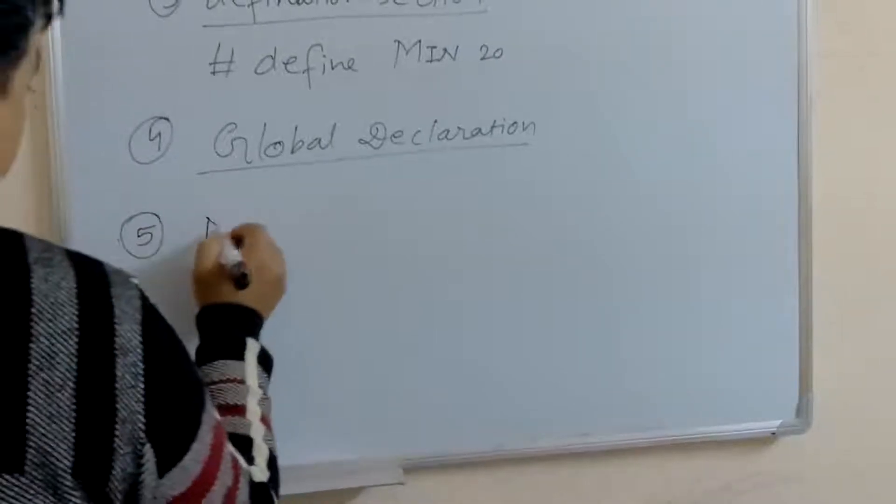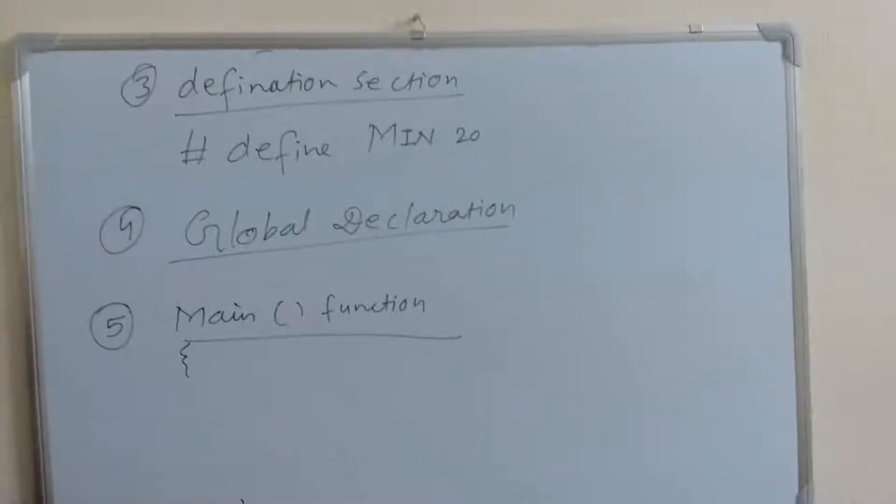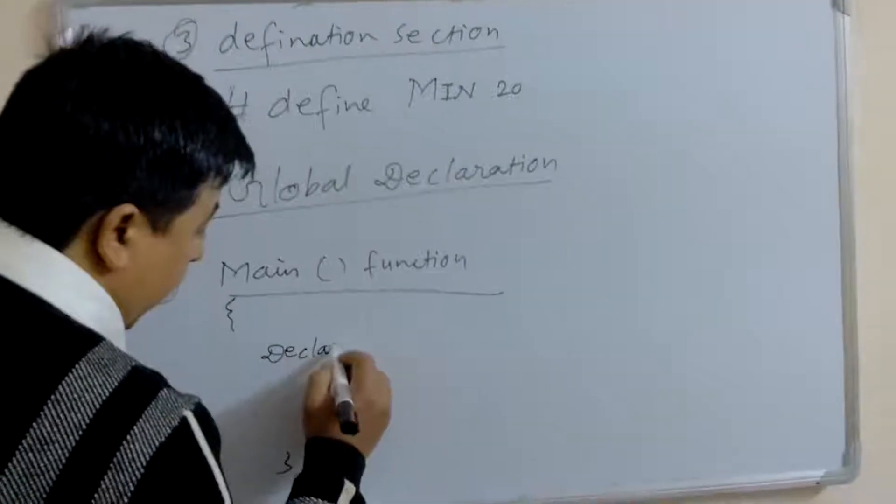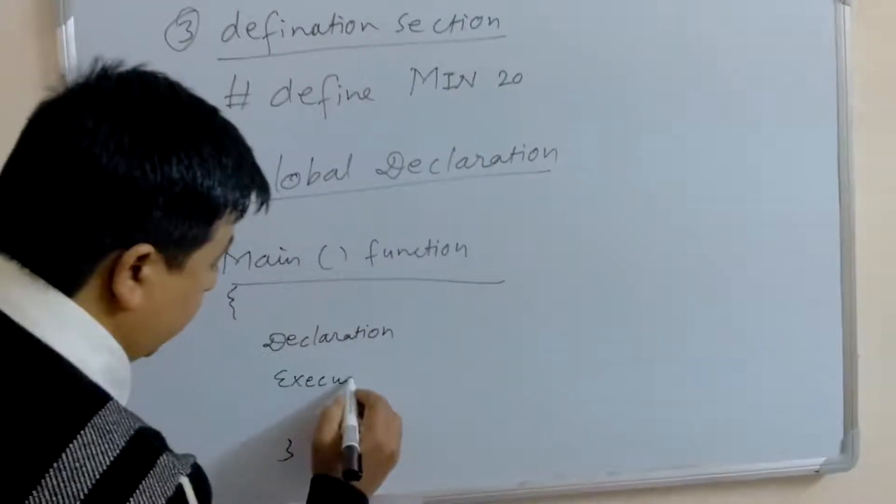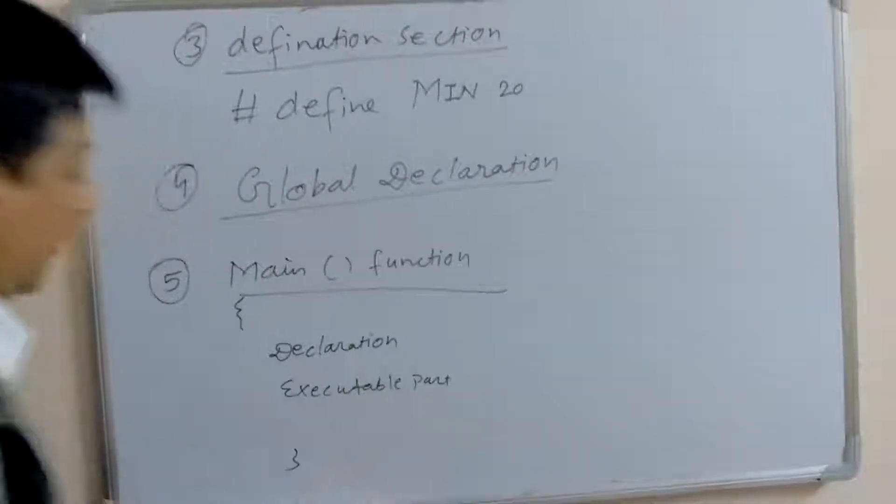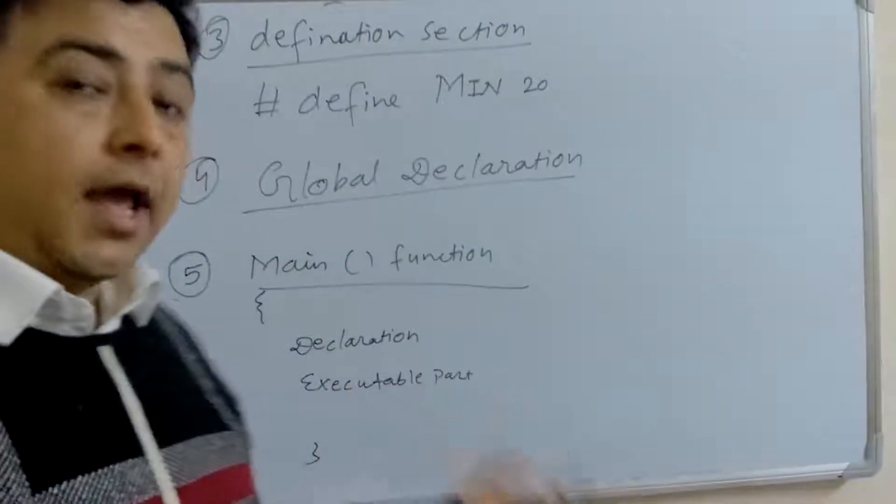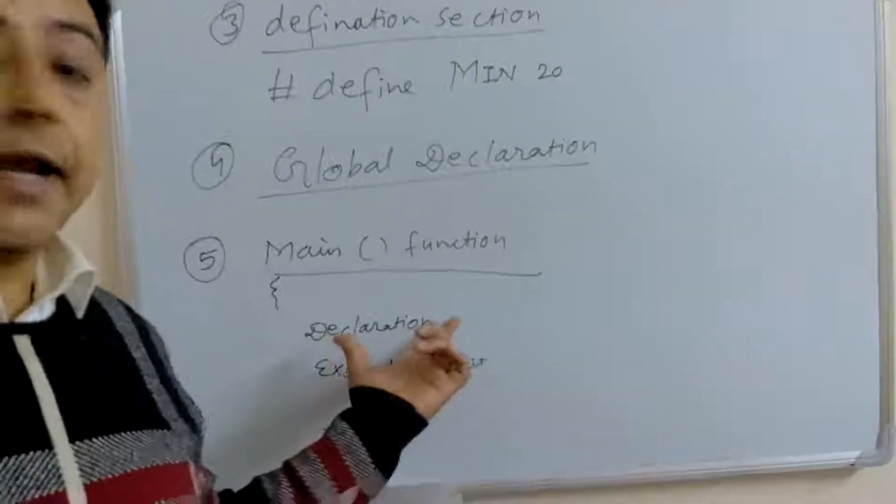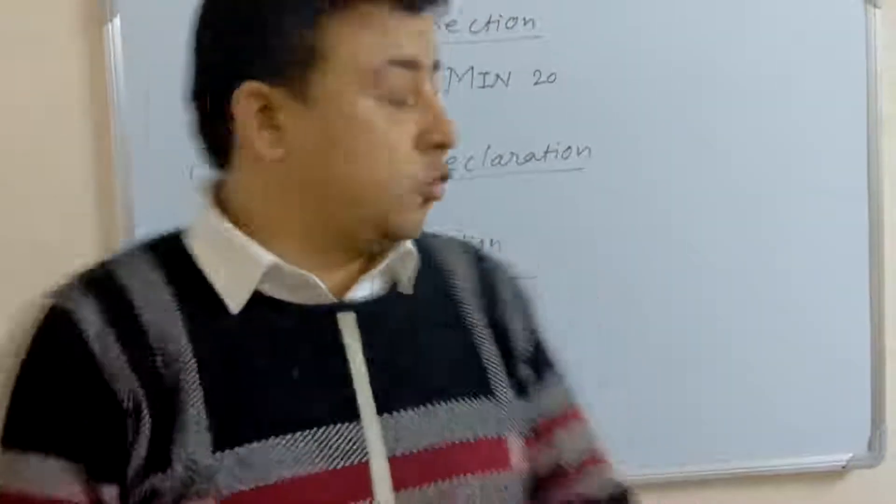Main function. This main function starts with curly braces and ends with curly braces. It is also divided into two parts: declaration and executable. The variables are declared in the declaration part. The variables are used in the executable part. These variables are declared in the declaration part with their data types that are used in the executable part.